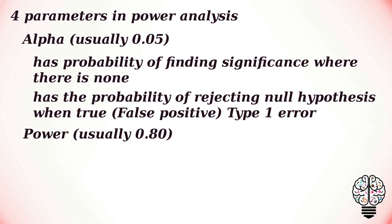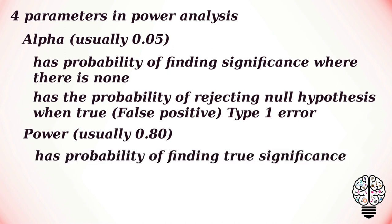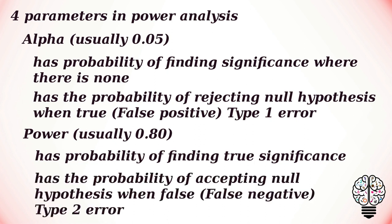The next one is power, which is usually set to 0.80, which has the probability of finding true significance. Power is the probability of accepting the null hypothesis even though it is false, that is a false negative. Power equals 1 minus beta, where beta is the probability of not finding significance when it is there, that is a false negative, and this is the probability of a type 2 error.